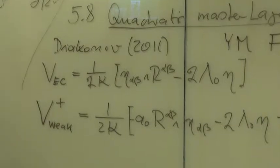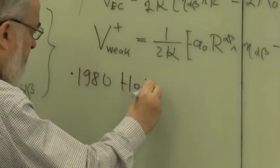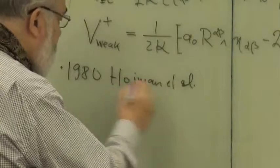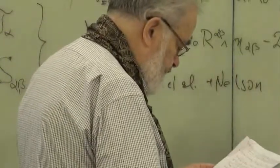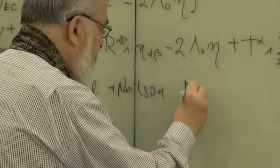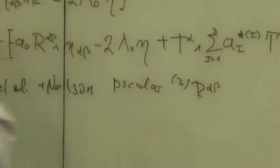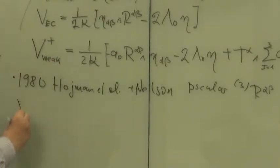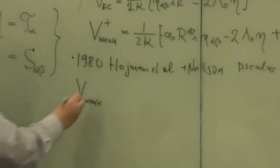Already in 1980, Holtzmann et al. added parity-odd pieces, and also in 1980 it was recognized that one could add the curvature pseudo-scalar. So that is R3-alpha-beta. So if we substitute also the torsion-square pieces, we have the B weak-gravity Lagrangian, which is either linear in curvature or quadratic in torsion, but now the odd pieces.